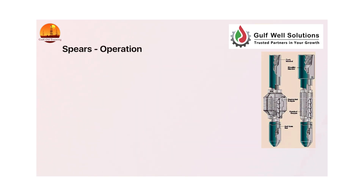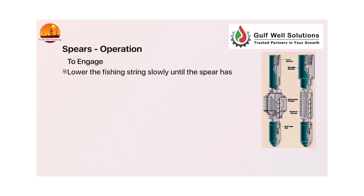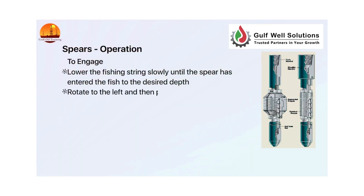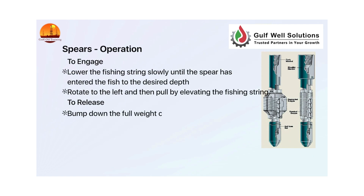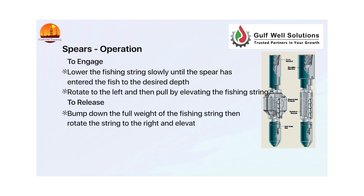Spears — operation. To engage: lower the fishing string slowly until the spear has entered the fish to the desired depth, rotate to the left, and then pull by elevating the fishing string. To release: bump down the full weight of the fishing string, then rotate the string to the right and elevate the string until it is clear of the fish.